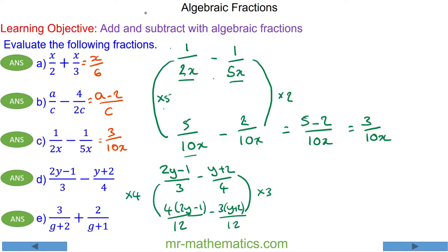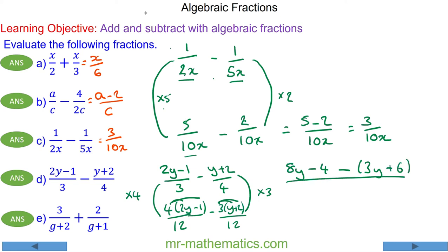Expanding the brackets: 4 times 2y is 8y, minus 4 times 1, take away 3 times y and 3 times 2, all over 12. Expanding fully gives 8y minus 4 minus 3y minus 6 over 12.